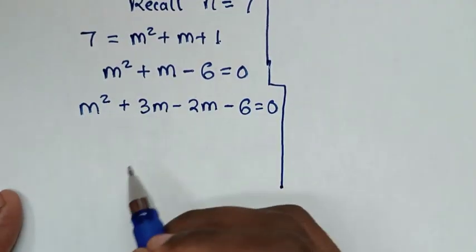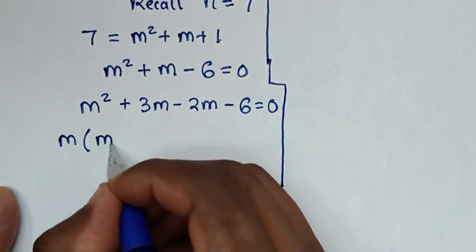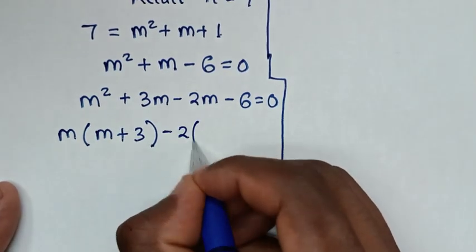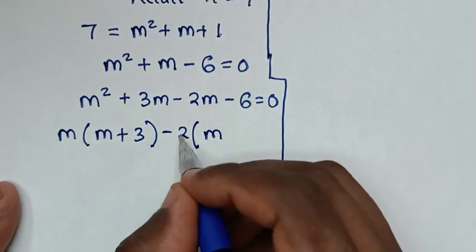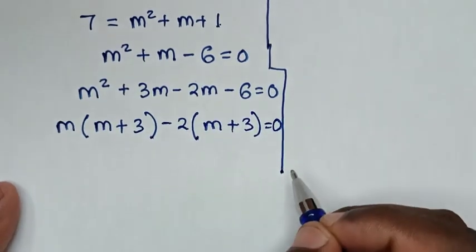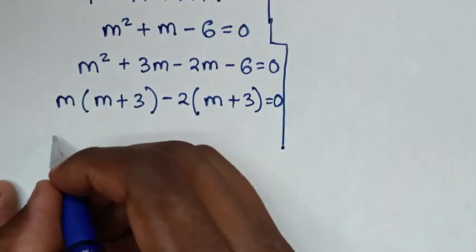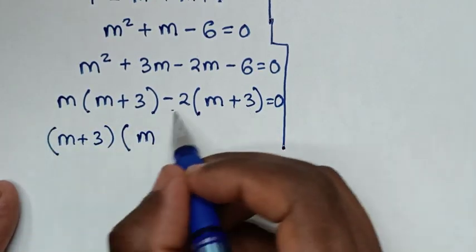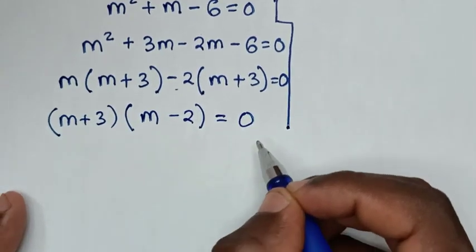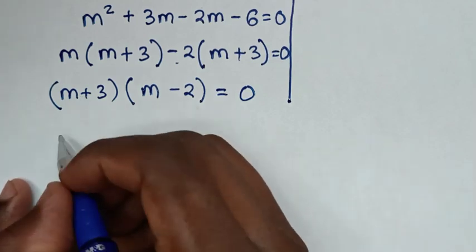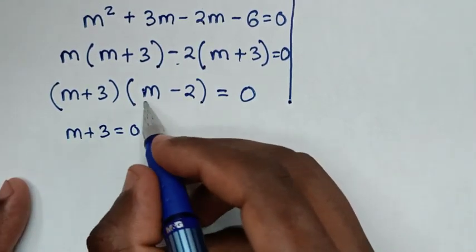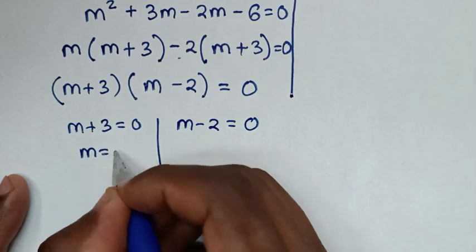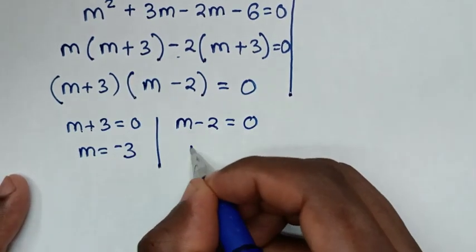Factoring out (m plus 3): (m plus 3)(m minus 2) equals 0. Therefore m plus 3 equals 0 giving m equals negative 3, or m minus 2 equals 0 giving m equals 2.